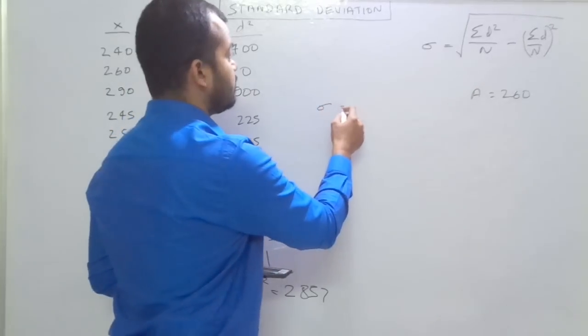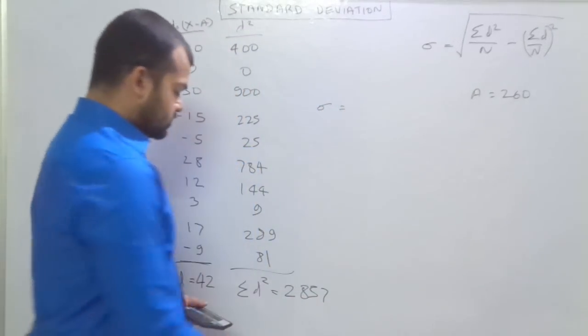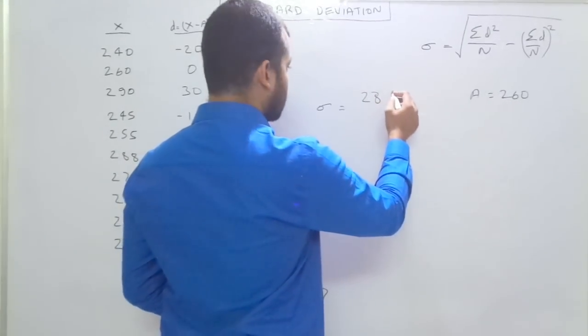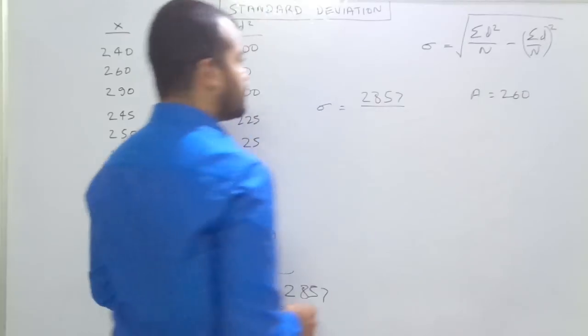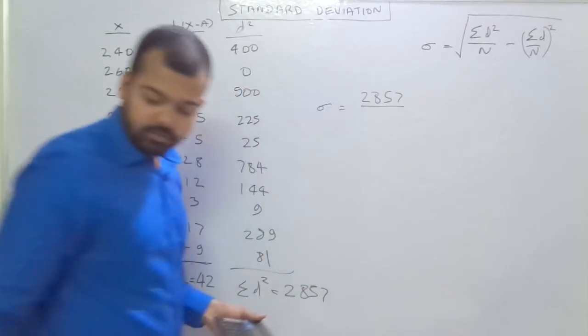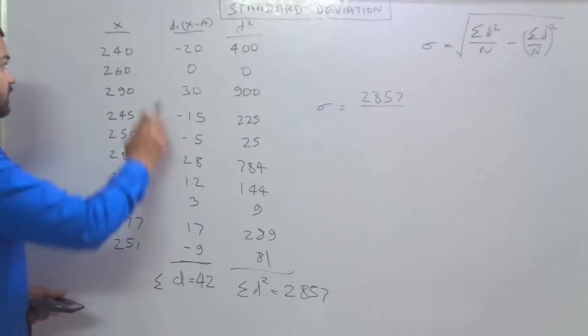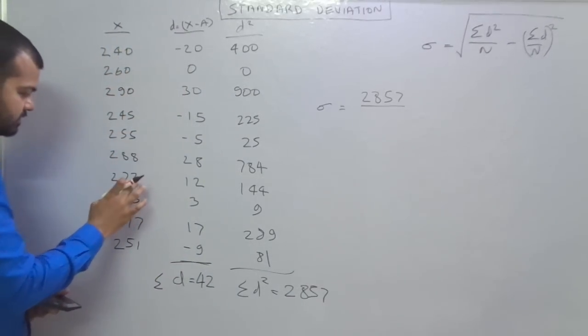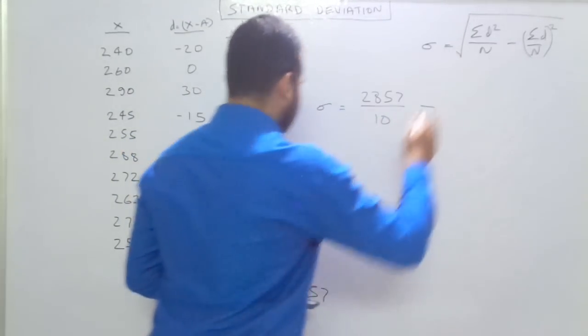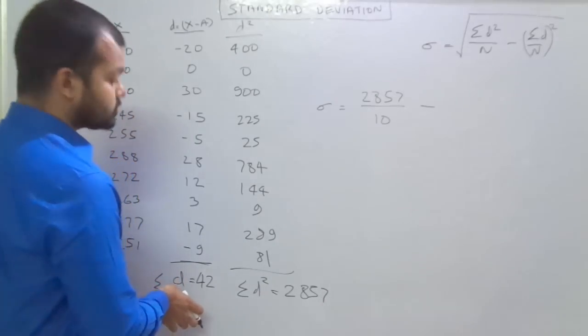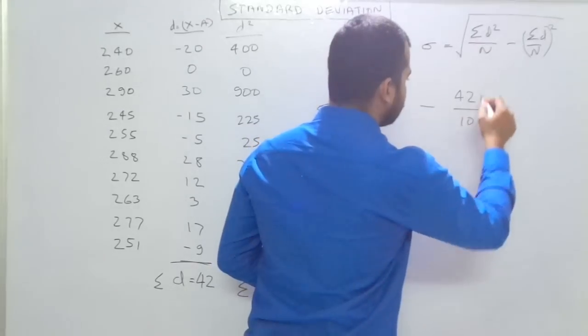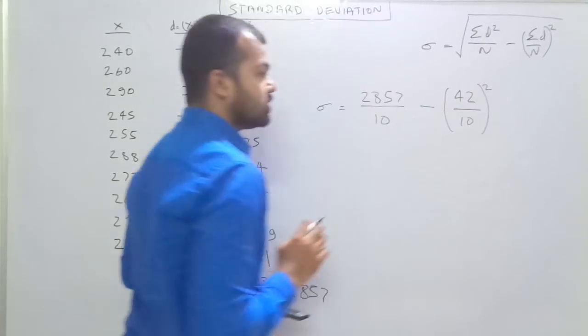So now putting the value in the formula. Summation D square is 2857 divided by n. In the individual series n is the total number of values. So we have to count the total number of values, which is 10. So here we can write 10 minus summation D that is 42 upon n means 10 the whole square. And then at last we have to put square root above it.